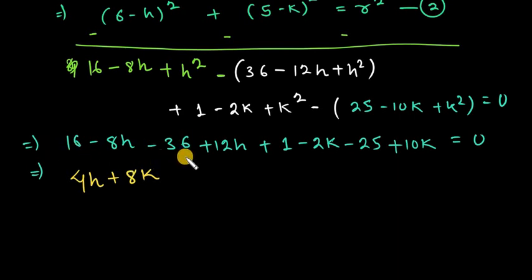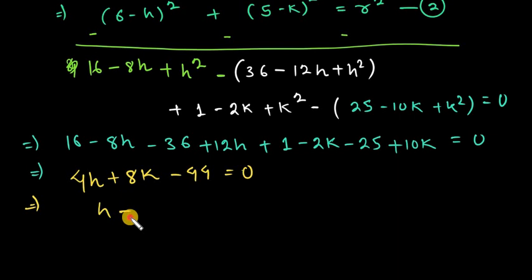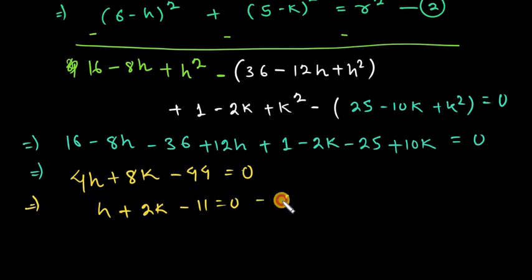16 minus 36 gives minus 20, and minus 20 plus 1 gives minus 19, and minus 19 minus 25 gives minus 44. So we have minus 44 equal to 0. Taking 4 as common: h + 2k minus 11 equals 0. This is Equation 3.